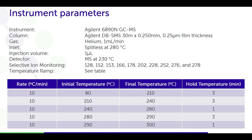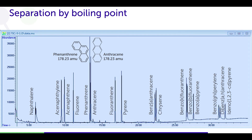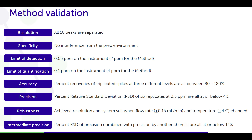Here are the instrument parameters. We do a SIM on certain ions that are known to be from the priority 16 pollutants. And here is a TIC — that is a total ion chromatogram — of the priority 16 pollutants. With phenanthrene and anthracene you have a bit of a resolution problem since they share the same molecular weight, so SIM isn't going to help you there. But pretty much everything else is resolved to some degree.